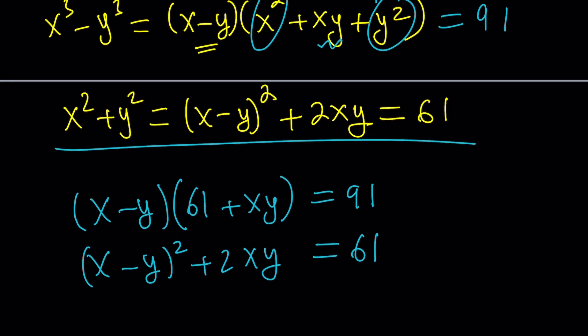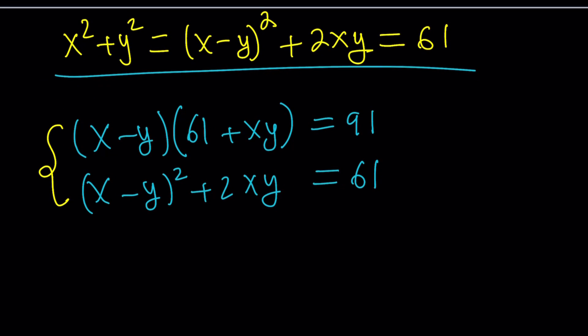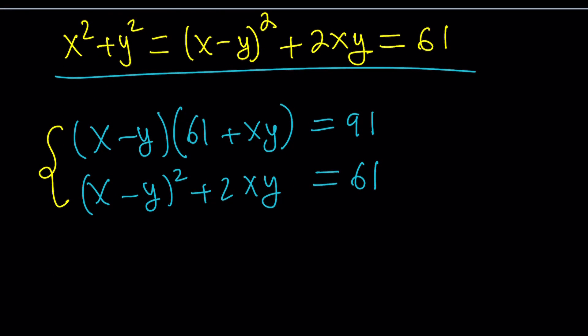Great. So these two equations are going to help us solve for x and y. And how do we go about solving it? We achieved our goal, actually, because we ended up with two variables. Notice that by using some identities, by using a little bit of algebra, we were able to turn this into a system of equations with two variables. What are those variables? Those variables are x minus y and xy. If we can find those, we can find x and y.